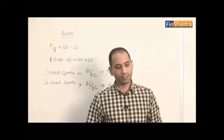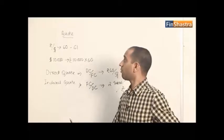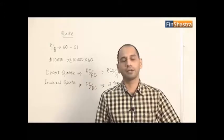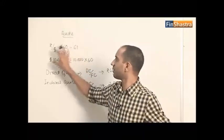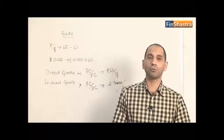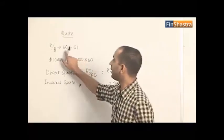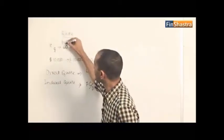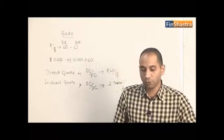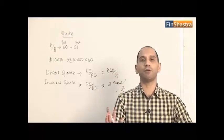Now let's look at the bid-ask rate. In the forex market you have a two-way quote. For rupee-dollar, the rate being quoted is 60-61 — this is very important, so pay close attention. When the market gives you such a quote, the lower number is the bid rate and the higher number is the ask rate. The bid rate is the buy rate and the ask rate is the sell rate.